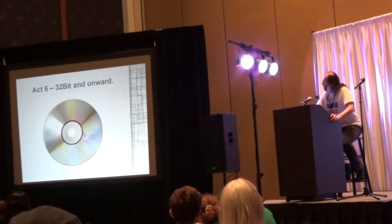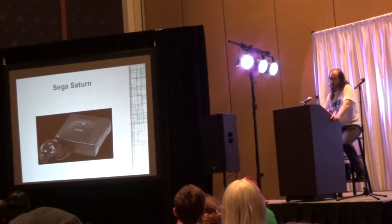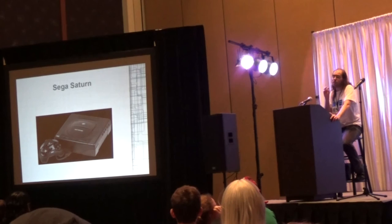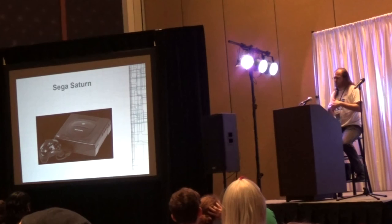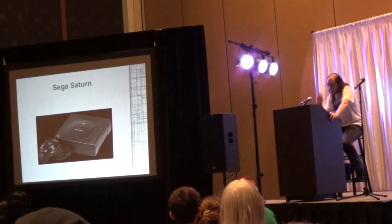We hit Act 6 — the 32-bit era onward, '95 to 2000. The Sega Saturn was released in '95, discontinued in '98. It was Sega's first true 32-bit console but was complex to code for, much like the Atari Jaguar. It had quality games with a lot of popular Sega arcade games ported over, but failed in the market due to competition. It was an expensive console with very limited third-party support.